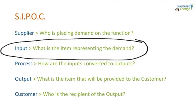Sometimes we get informal or unstructured inputs into our process area which are often overlooked — a verbal request, an email, a document, or just straight over the phone where someone says, 'Hey, can you do this?' And all of a sudden the function begins taking on a lot more work than it initially intended to.